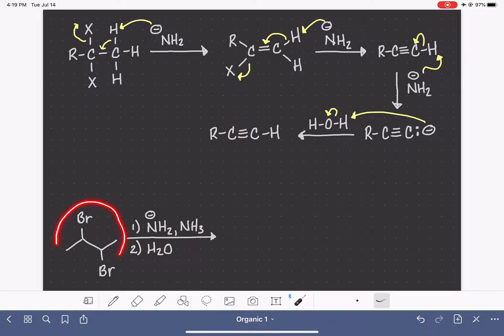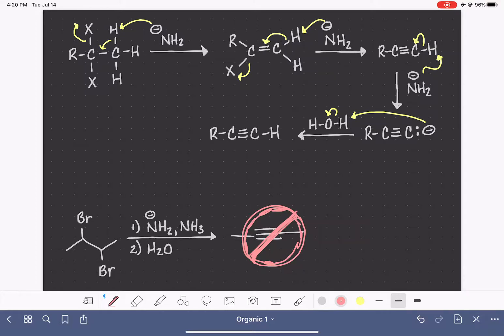But if you have a molecule like this where we have a vicinal dihalide and the halogens are inside the molecule, we might think that this reaction would produce this alkyne right here where we're getting elimination in between the two halogens. That would be a very logical assumption for us to make. But in fact, that is not the product that is formed in this reaction.